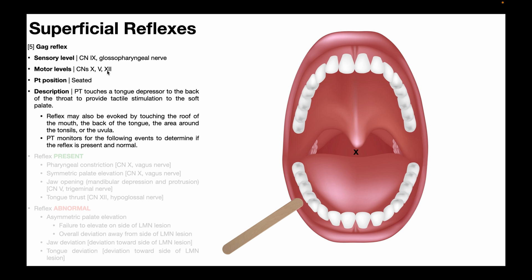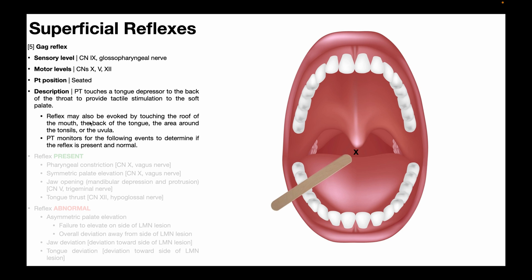To assess for presence of the gag reflex, the patient is positioned and seated with their mouth wide open. The PT is going to touch a sterile tongue depressor to the back of the throat to provide tactile stimulation to the soft palate. Looking at this x-ray, this is approximately the spot you're going to touch — right below the uvula and posterior to it in the back of the throat. Note that this reflex may also be evoked by touching the roof of the mouth, the back of the tongue, the area around the tonsils, or the uvula.